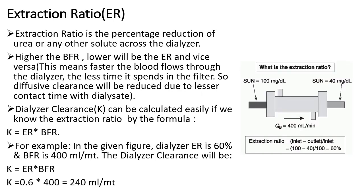The second characteristic is extraction ratio, or simply ER. Extraction ratio is the percentage reduction of urea or any other solute across the dialyzer. Looking at the figure on the right side of the slide, the dialyzer inlet urea concentration is 100 mg/dL and the outlet is 40 mg/dL at a blood flow rate of 400 ml per minute. We can calculate the extraction ratio using the formula: ER = (inlet concentration − outlet concentration) / inlet concentration.